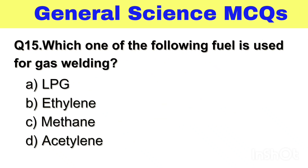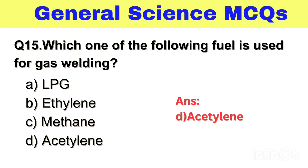Question No. 15. Which one of the following fuels is used for gas welding? Option A. LPG, B. Ethylene, C. Methane, D. Acetylene. The right answer, Option D. Acetylene.